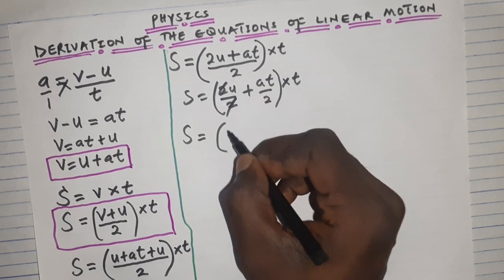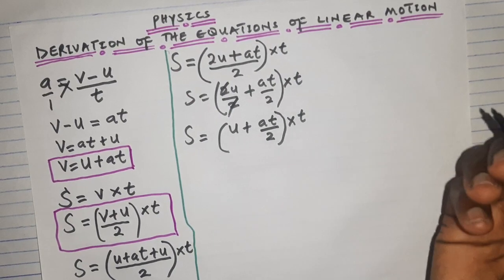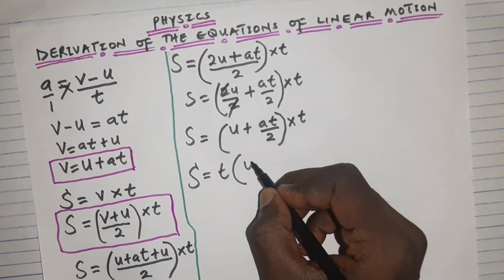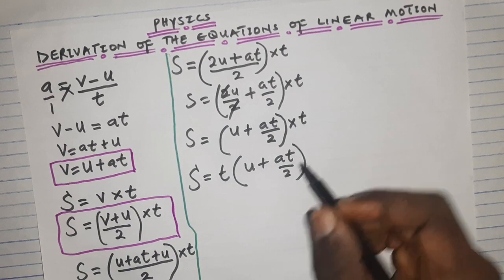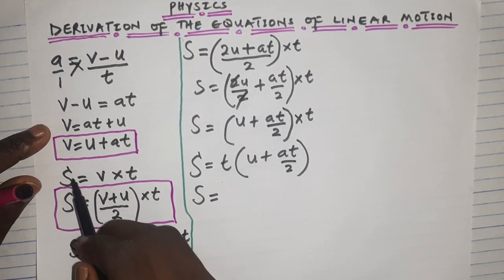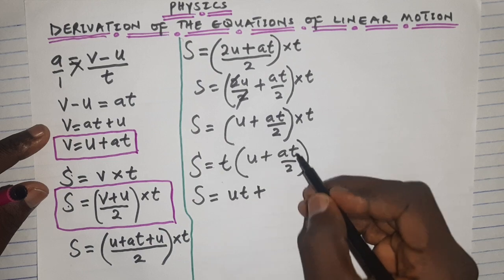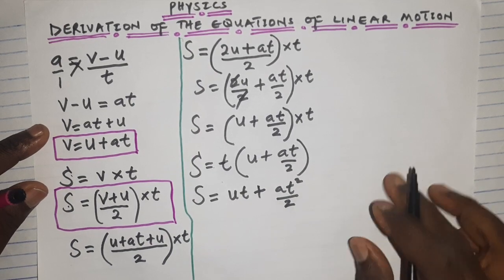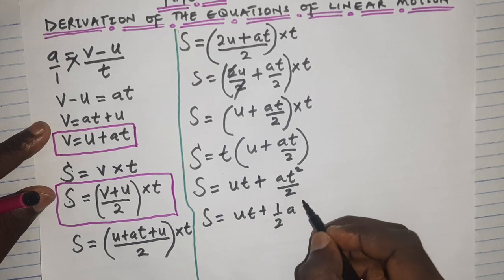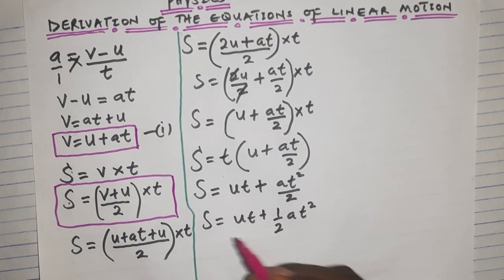Multiplying out by t: s = ut + at²/2, which can also be written as s = ut + ½at². This is our second equation of linear motion.